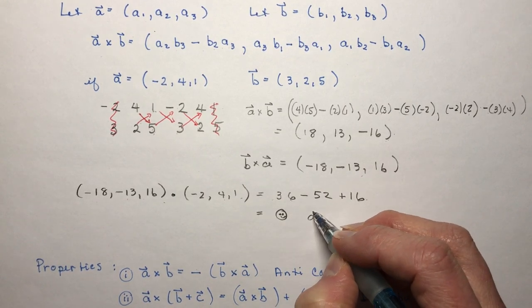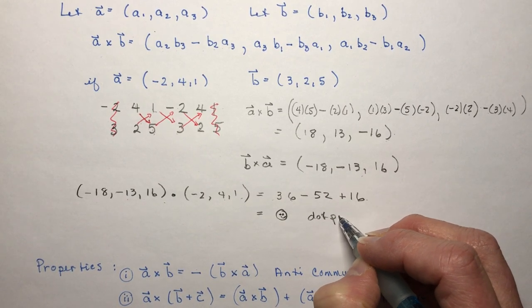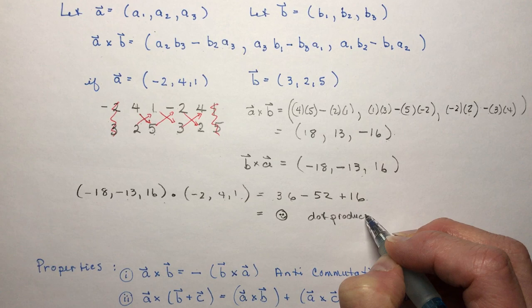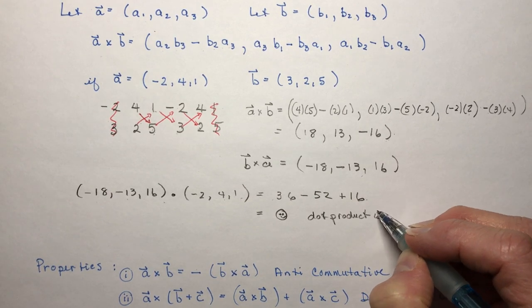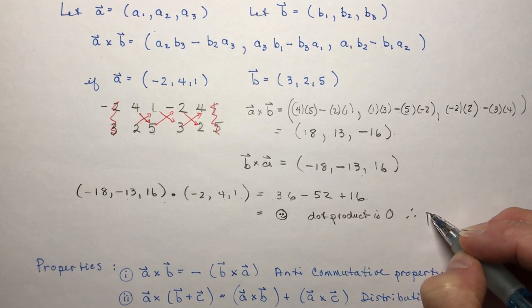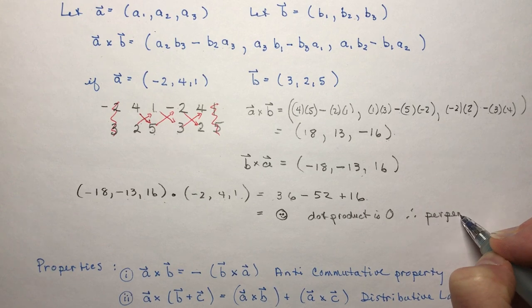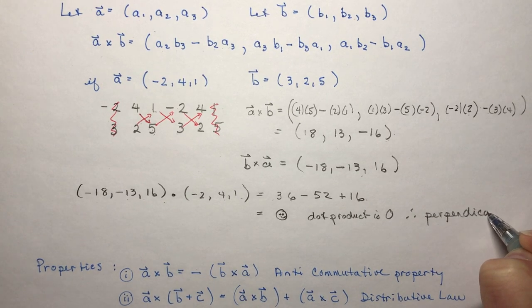So if your dot product is 0 that means that the two vectors are perpendicular. That means you did find the normal vector perpendicular.